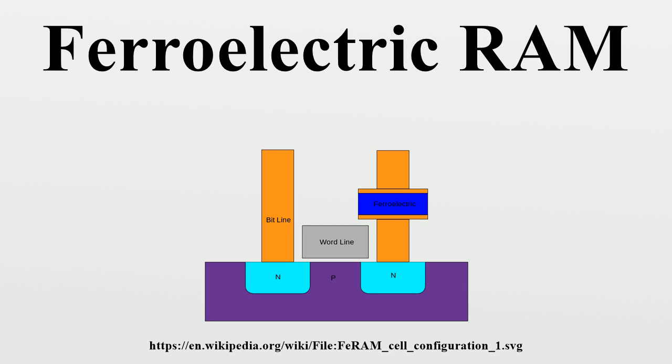In general, the operation of FeRAM is similar to ferrite core memory, one of the primary forms of computer memory in the 1960s. In comparison, FeRAM requires far less power to flip the state of the polarity, and is so much faster.